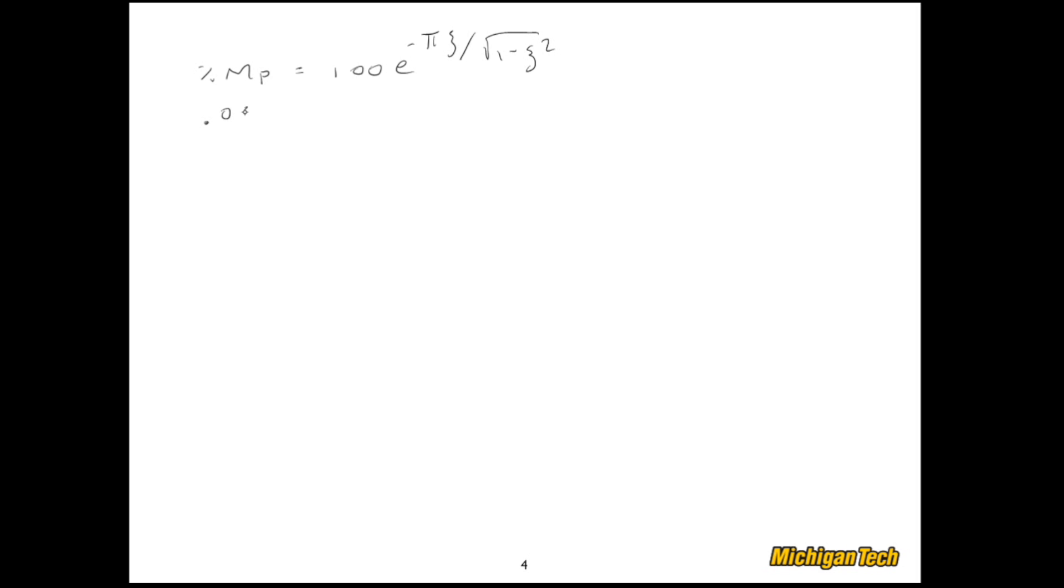We could put 0.05 over here is equal to e to the negative pi zeta over the square root of 1 minus zeta squared. We could take the natural log of both sides, like so. That gets rid of the e.